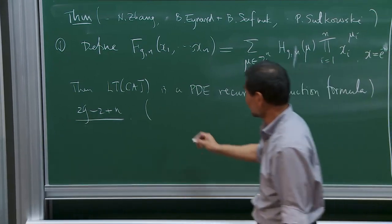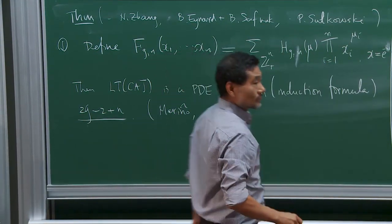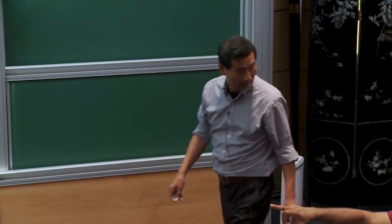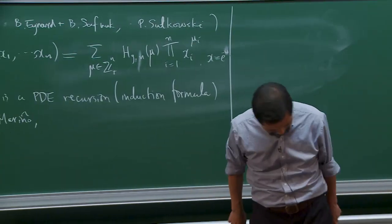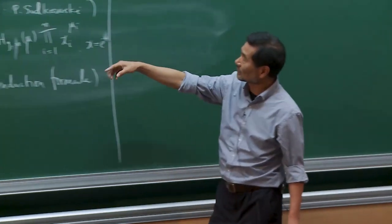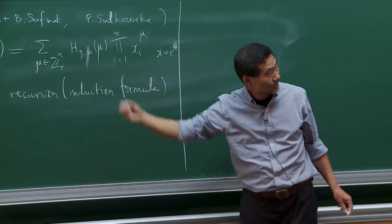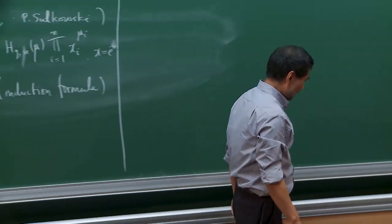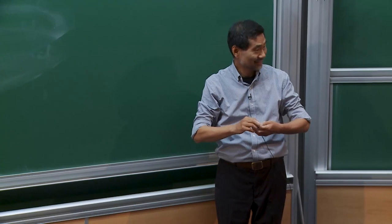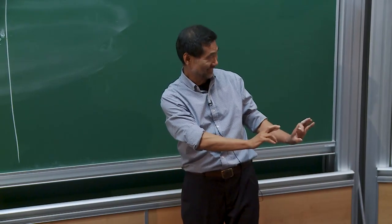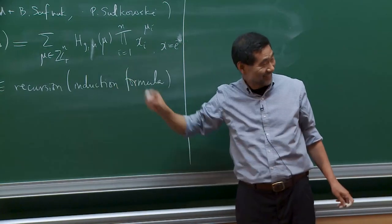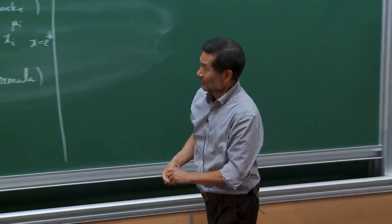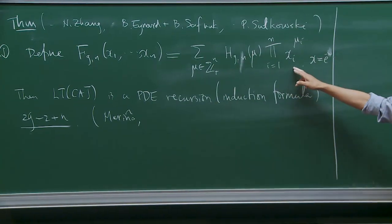This is a convergent power series with non-zero radius of convergence, not just a formal power series — the variables x are complex parameters. The reason to call it a Laplace transform is that it transforms the equation itself into an equation. After long calculations, one introduces a new variable T related to a parameter of a projective line. Introducing this variable, where x_1, ..., x_n are expressed as functions of T_1, ..., T_n, f_{g,n} becomes a polynomial in T of degree 6g minus 6 plus 3n. This was a very surprising result.